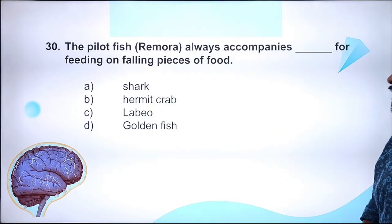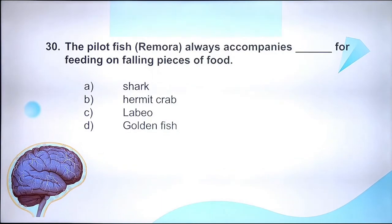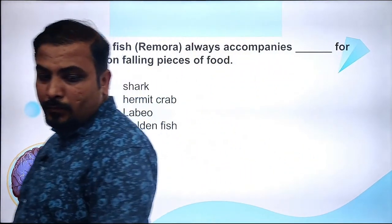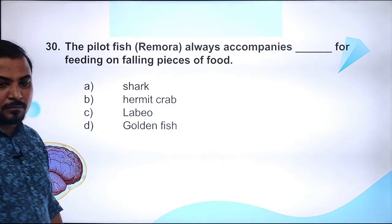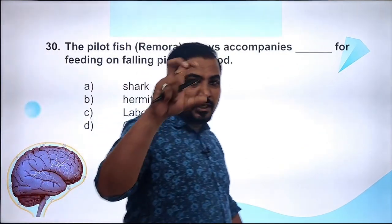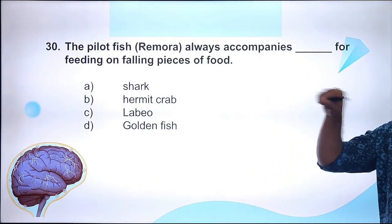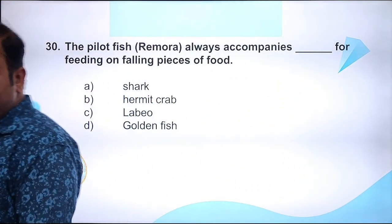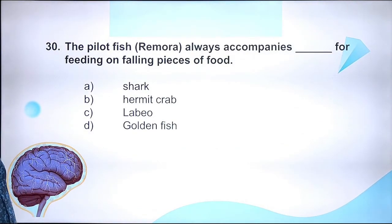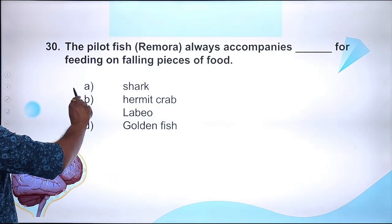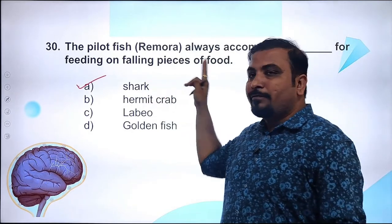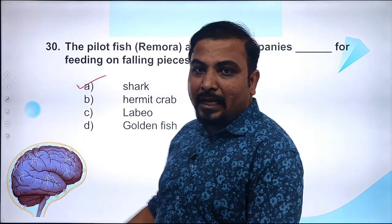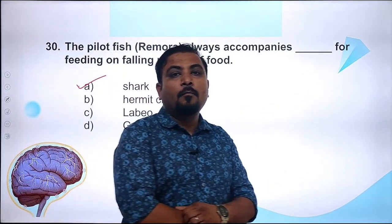Question 30 - the last question of today's lecture: The pilot fish Remora always accompanies dash for feeding on falling pieces of food - shark, hermit crab, labio, or golden fish? Pilot fish and Remora are always associated with sharks, feeding on falling food pieces when the shark hunts. The right answer is Option A - shark.